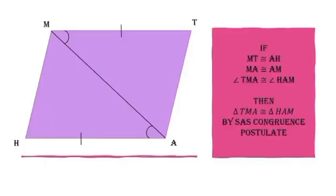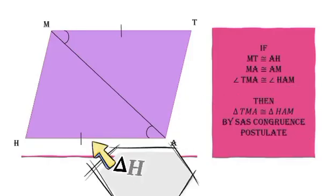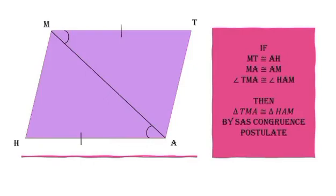Sa ating second figure, meron tayong triangle TMA at saka triangle HAM. As you can see, merong isang diagonal sa figure natin. Yung diagonal na yan ang nagsisilbing isang side ng dalawang triangle. Meaning, by reflexive property, equal sila.